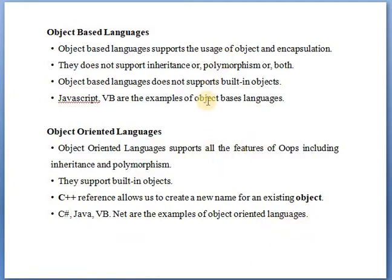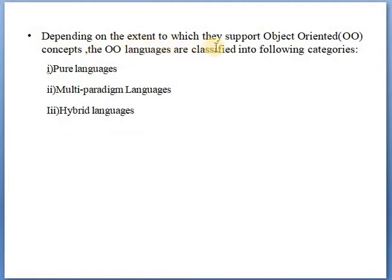These two are the classifications of object oriented languages depending upon the usage of objects. Now we will see another classification. Depending on the extent to which they support object oriented concepts, object oriented languages are classified into three categories: pure languages, multi-paradigm languages, and hybrid languages.